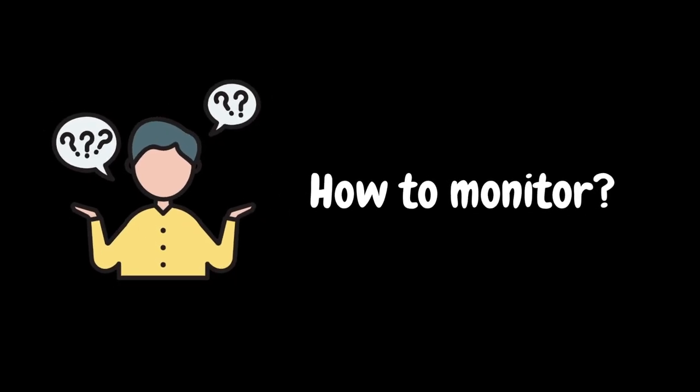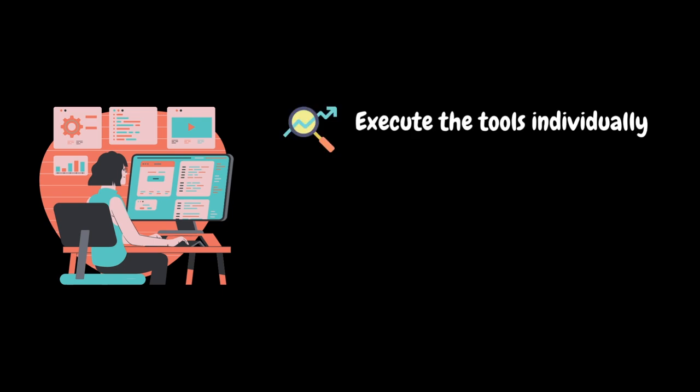You must be wondering how to monitor the Linux server performance using these different tools. Essentially, there are various ways to monitor Linux performance using the available native monitoring tools. One approach is to execute the tools in the terminal and capture all the necessary performance metrics. Another approach is to create a custom shell script and schedule them to capture the metrics periodically. For example, if you are troubleshooting a performance issue, you can run the tools in the terminal to identify the root cause. Or if you are scheduling a load test, then you can use custom shell scripts to capture metrics periodically.